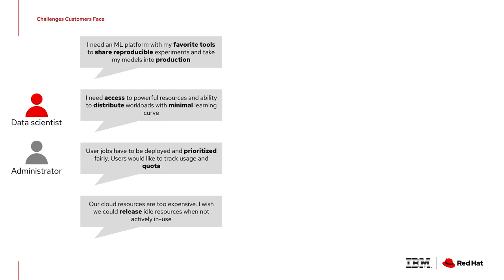When we run AI-ML workloads, it's very expensive because we need access to expensive resources. What racks up costs a lot of times is that these resources sit idle overnight or while the developer or data scientist is writing the script — we're not actively using these resources, but we're still holding on to them. Wouldn't it be nice to release these resources when not in use and only use them when actively training models?